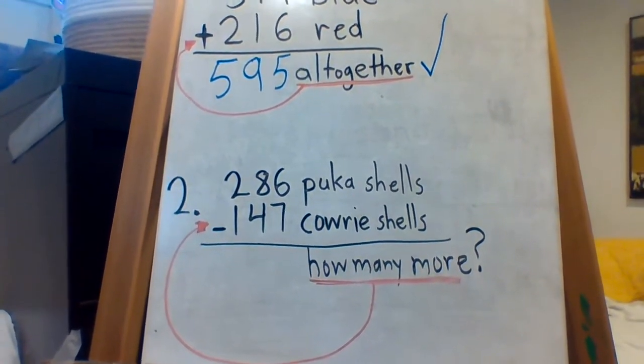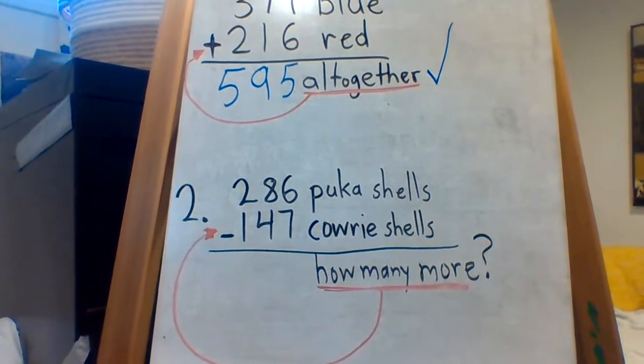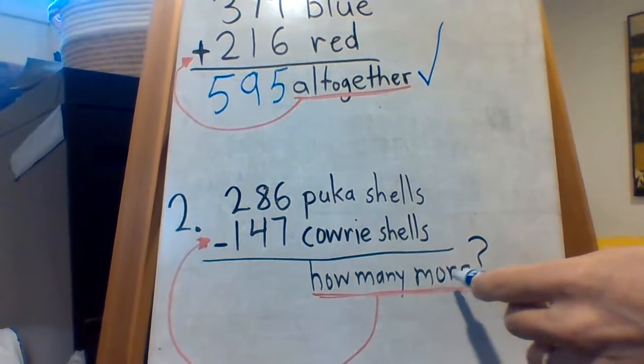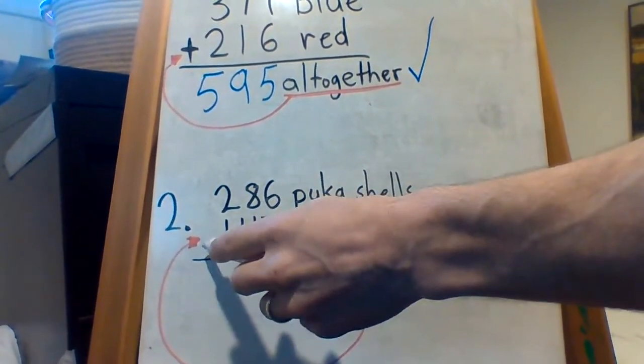But now here's the question. How many more puka shells than cowrie shells does she have? So there's the phrase that means subtraction. How many more? Okay,